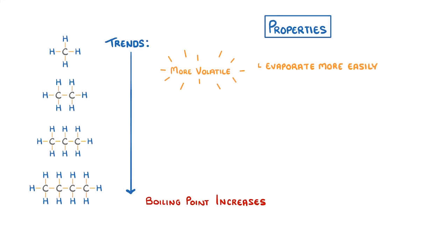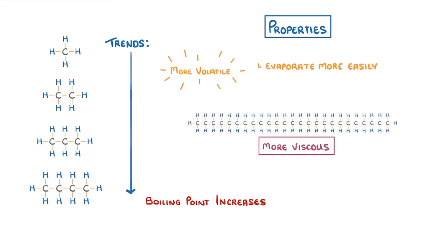Meanwhile, the longer alkanes are more viscous, which just means that they're kind of thick and sticky, like honey.